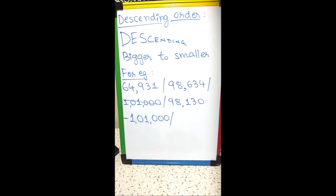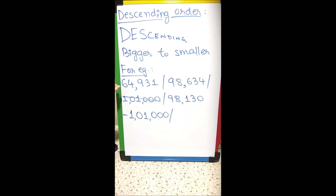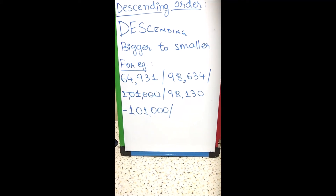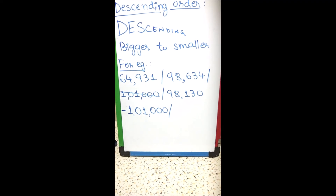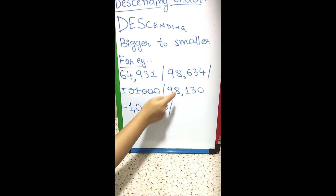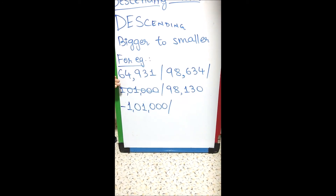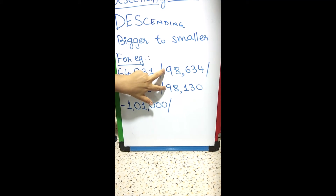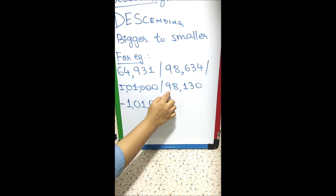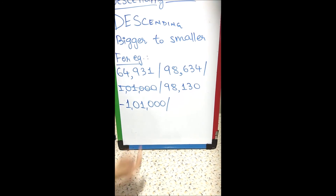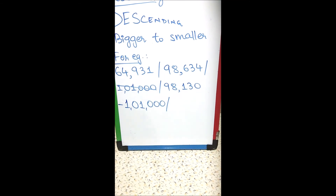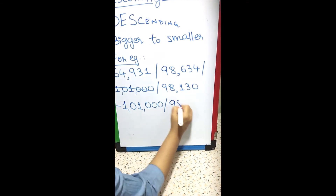Cancel it out so you know only three numbers remain. All three are five digit numbers, so let us compare from the left. The first digits are 6, 9, and 9 — so 6 is smaller and will be arranged afterwards. Comparing the two nine-starting numbers: both have 98 in the first two places, so we move to the third digit: 6 versus 1. Since 6 is bigger, 98634 comes second.